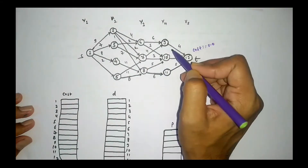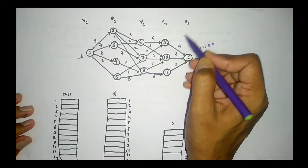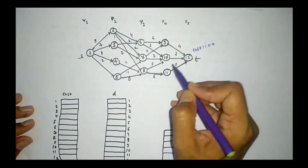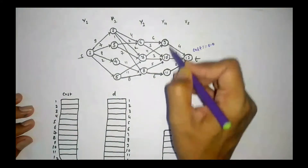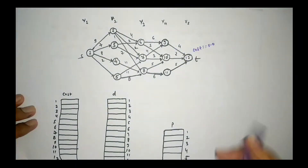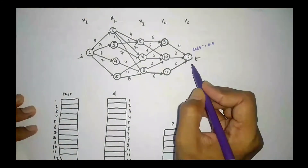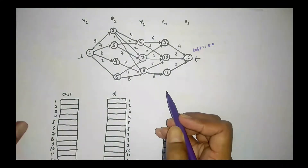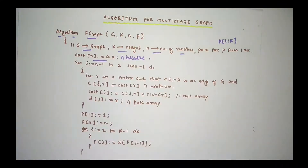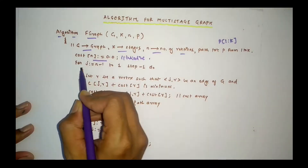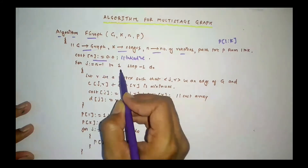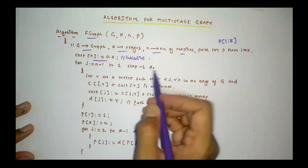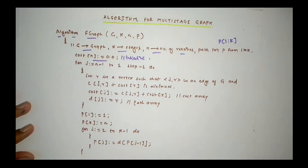Now we have to do a backward move, and for every vertex we need to calculate the cost. For example, vertex V4 — that means the 4th vertex — so we need to calculate cost(4, 9). We need to calculate the cost for every vertex effectively, so we have to move backward. For the loop, we have to mention: for j equal to n-1 to...